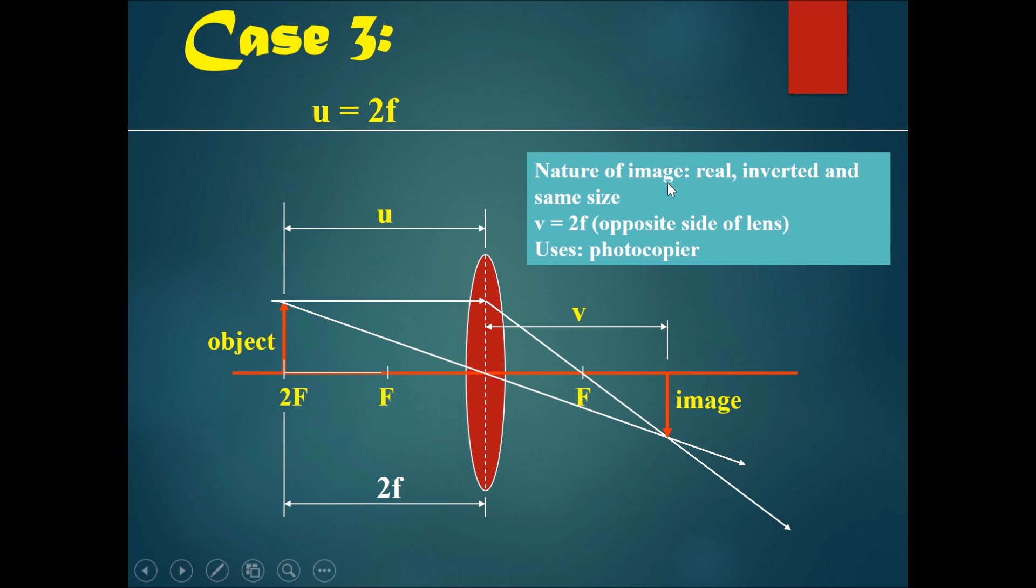And the nature of the image for this case would be that it is real, inverted, and exactly the same size. This is quite interesting because this is what a photocopier does. A photocopier takes a piece of A4 paper, uses a lens to make a copy of the object, and produces the exact image that is the exact same size.